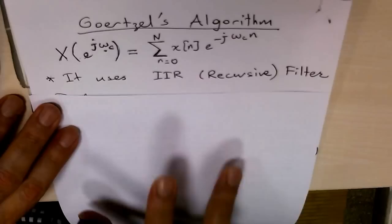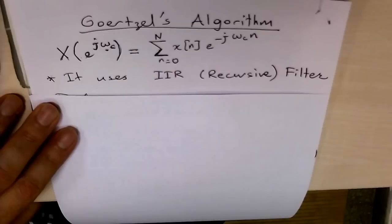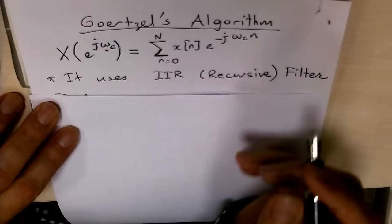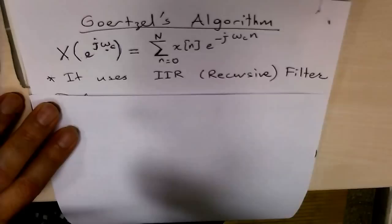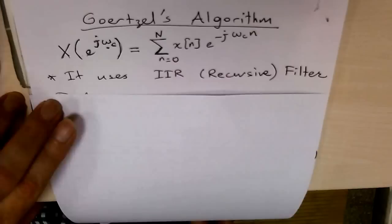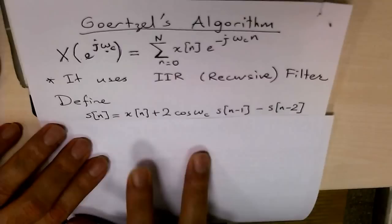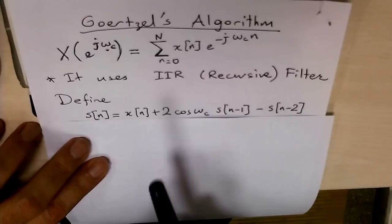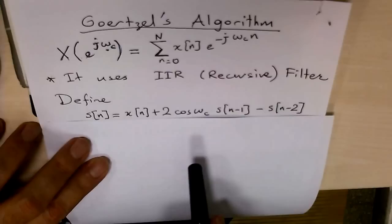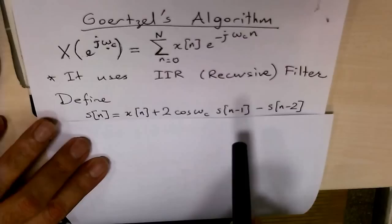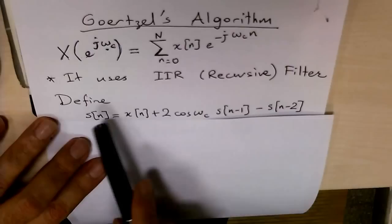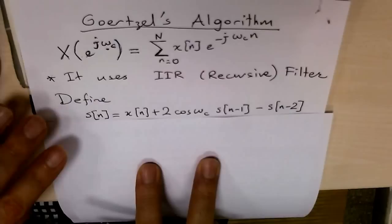The algorithm uses an IIR structure — actually, it uses two IIR filters. The development is based on two filters. We will first define sequence S[n], which is equal to X[n] plus 2*cos(omega_c)*S[n-1] minus S[n-2]. Here, cos(omega_c) is a specific constant number. We will assume that S[-1] and S[-2] are equal to 0. This is a recursive IIR filter.